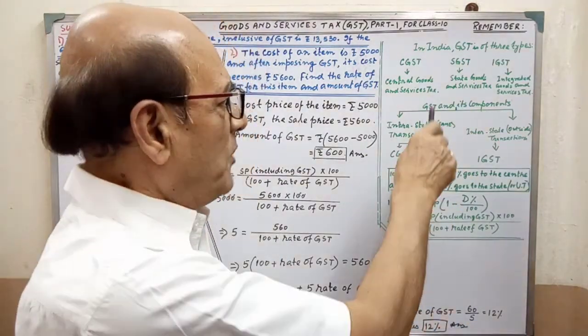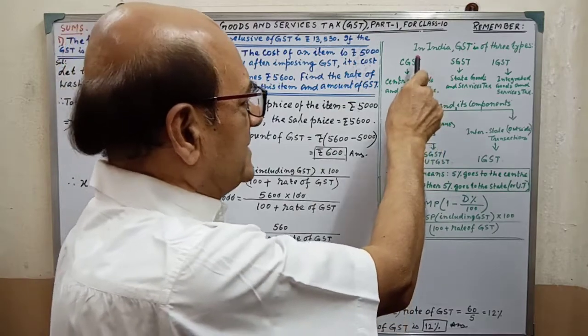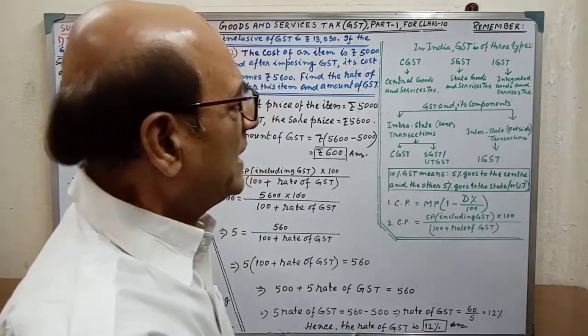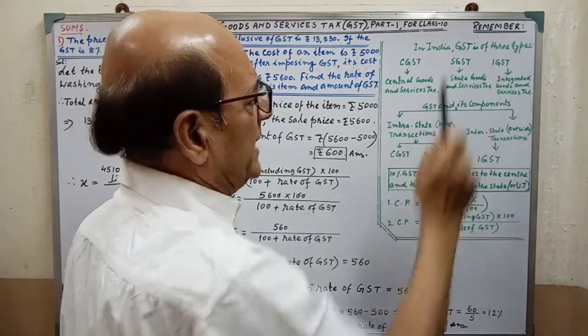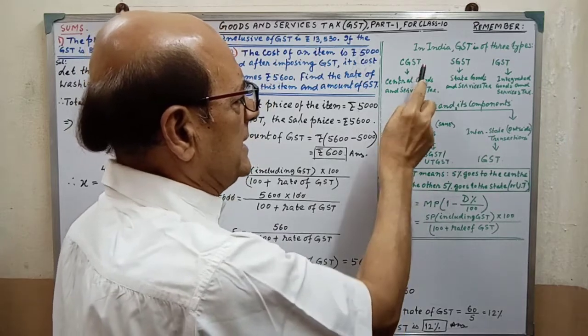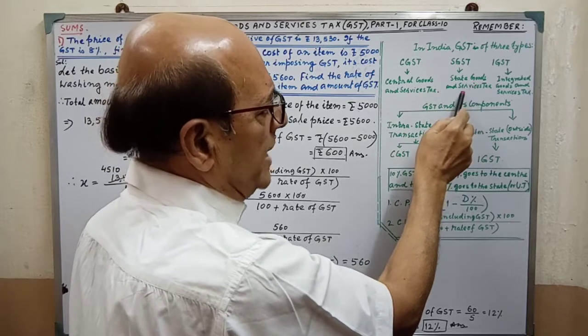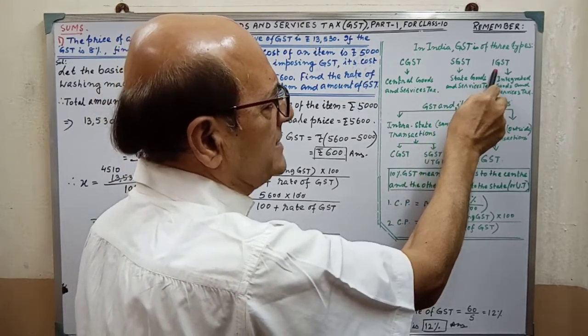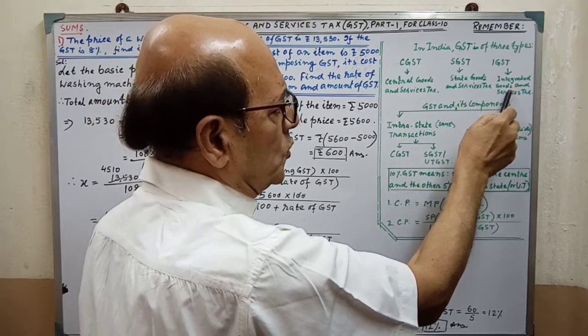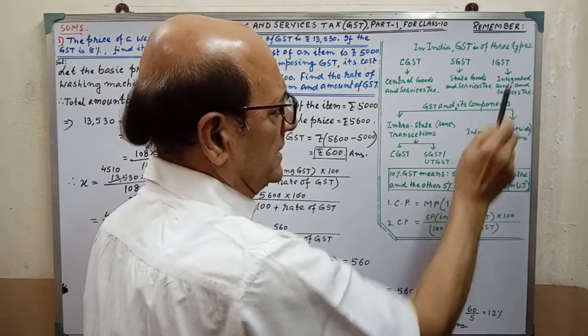You will get information that in India GST is in three types: CGST, Central Goods and Service Tax; SGST, State Goods and Service Tax; and IGST, Integrated Goods and Service Tax. These are the three types.